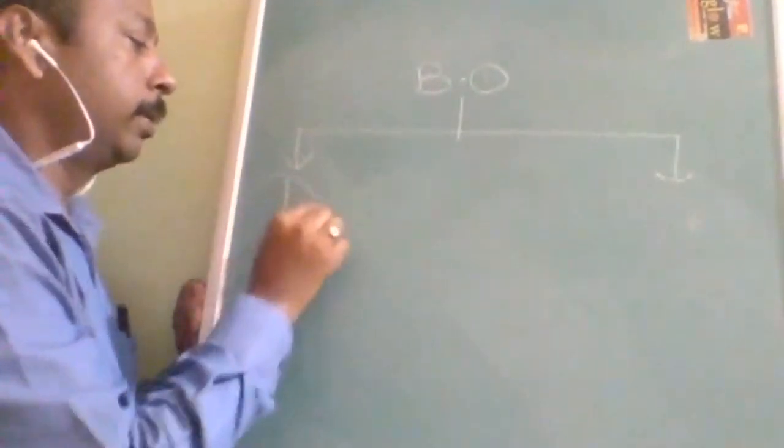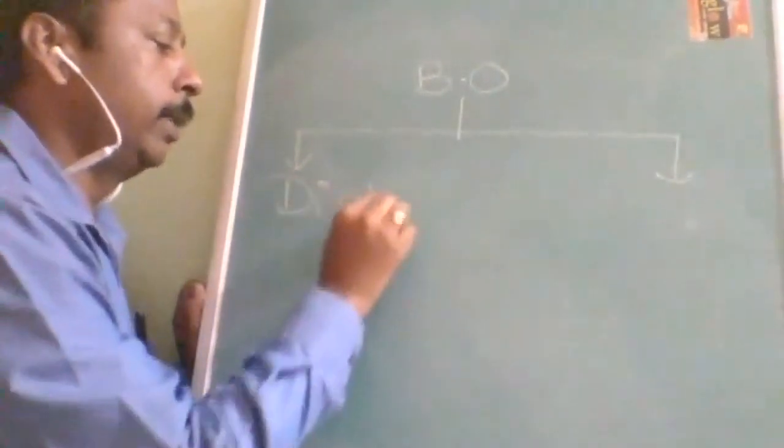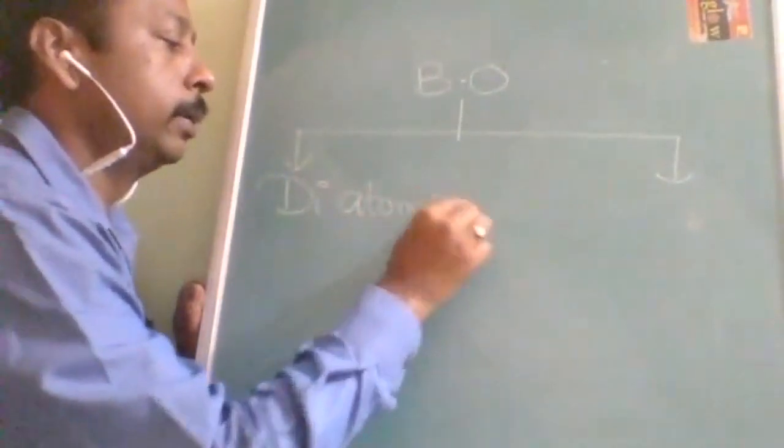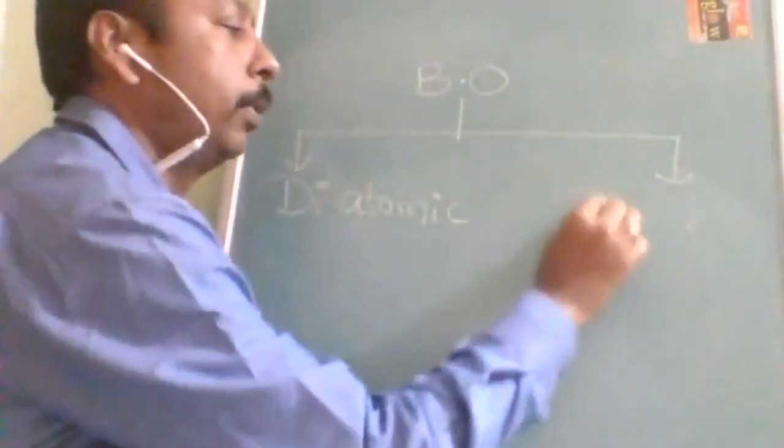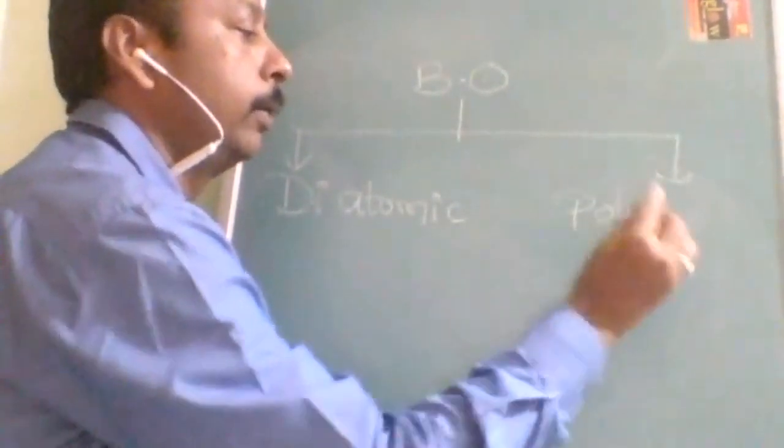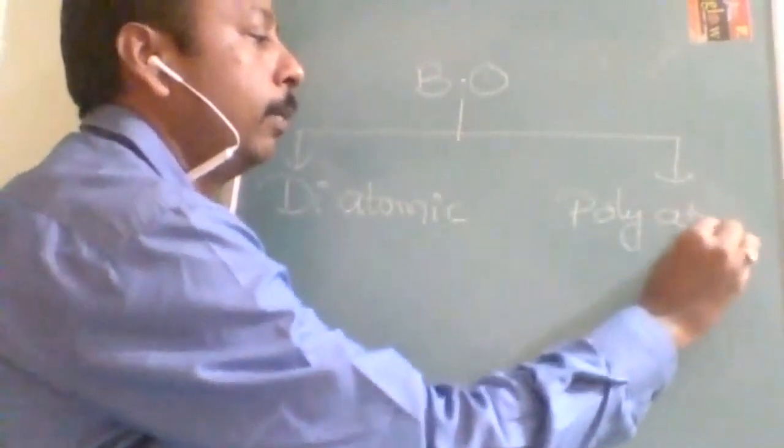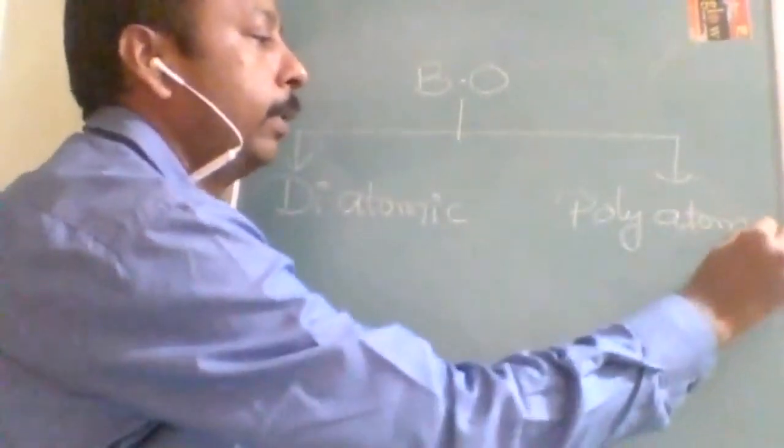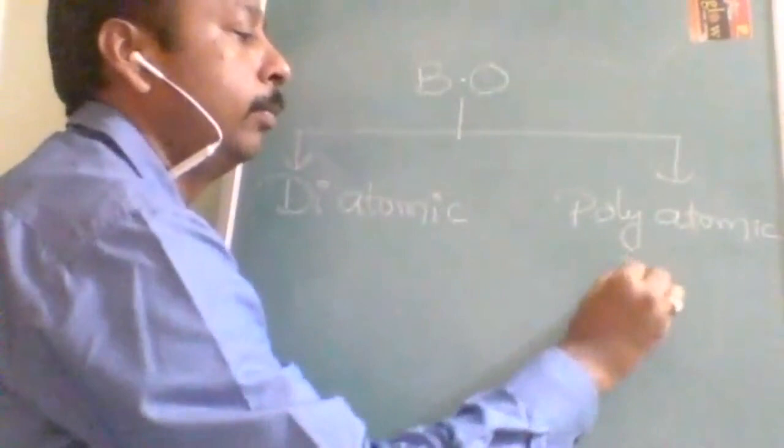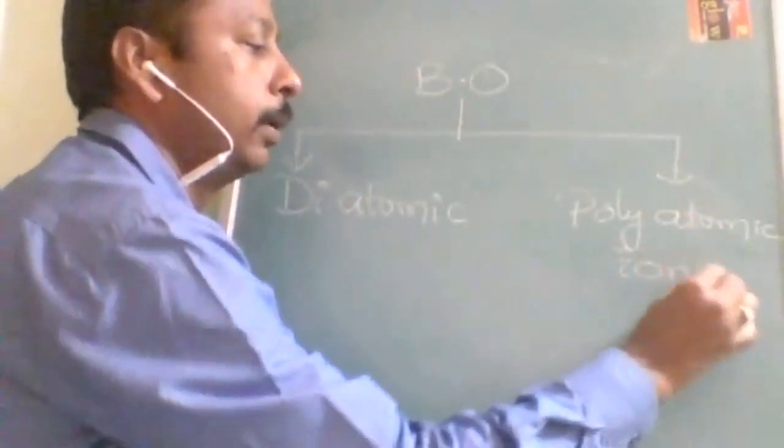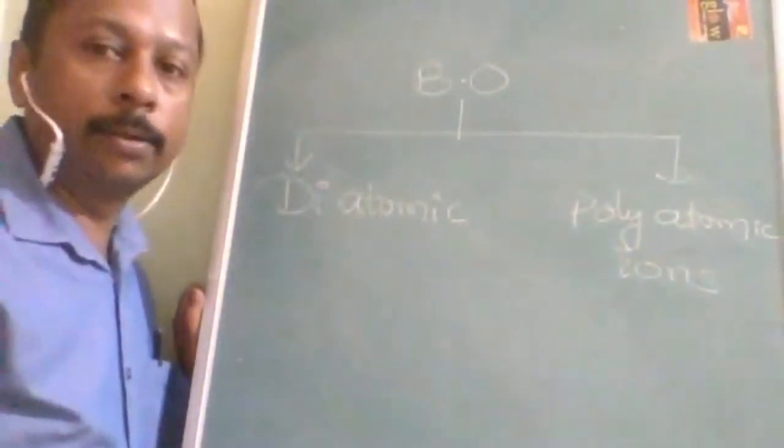Methods to determine bond order: first major part is if it is a diatomic molecule, one procedure. OK, if it is a polyatomic molecule or ion, polyatomic, it can be molecule or it can be ion only. OK, but most probably the questions are on the polyatomic ions.